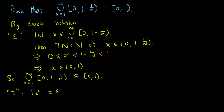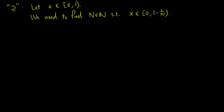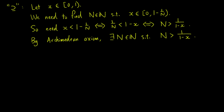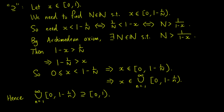Conversely, let x be an element of the interval [0, 1). We have to find an n such that x is in the interval [0, 1 - 1/n). For x to be in that interval, we need x to be less than 1 - 1/n, which holds if and only if 1/n is less than 1 - x, or n is greater than 1/(1 - x). Now, we can find such an n by applying the Archimedean axiom. Then 1 - x is greater than 1/n, or x is less than 1 - 1/n. So 0 is less than or equal to x is less than 1 - 1/n, meaning x is in the interval [0, 1 - 1/n). This implies that x is in the infinite union of the intervals [0, 1 - 1/n), and so the other inclusion is complete.